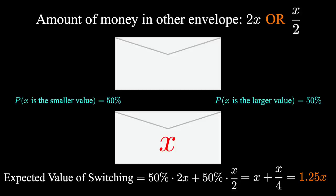In other words, our expected value of switching is 25% more than keeping the envelope we originally chose, x versus 1.25x. What's going on here? How can switching be a better strategy, regardless of which envelope we originally chose?